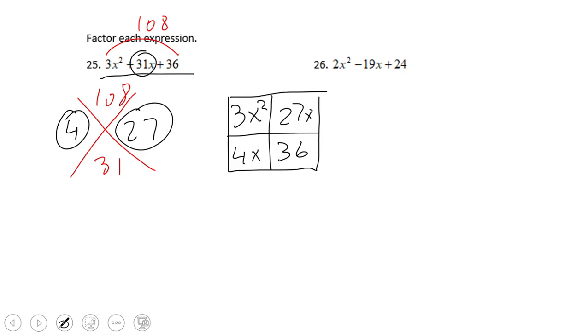Now we're gonna factor each column and each row, in other words factoring by grouping. So here we have 3x squared and 27x—they have 3x in common. 4x and 36 have 4. 3x squared and 4x have x, and 27x and 36 have 9. Everything gets positive here so it's pretty easy. The final answer is 3x plus 4 and x plus 9.